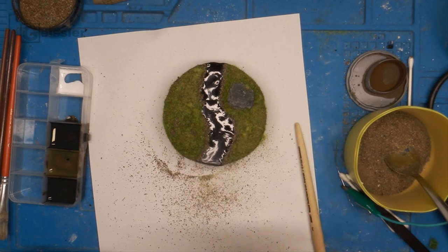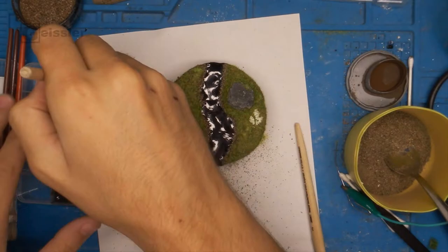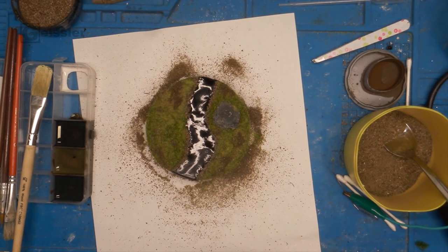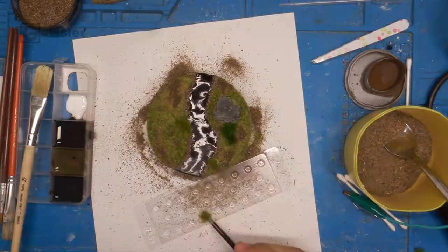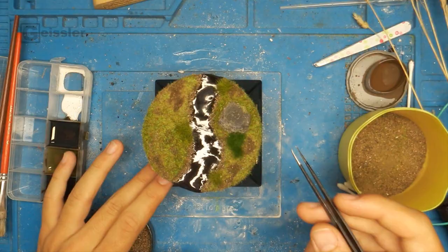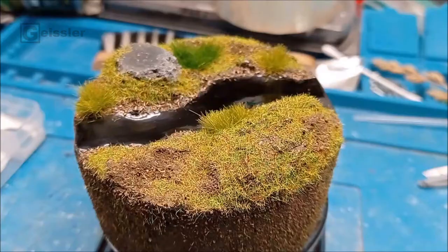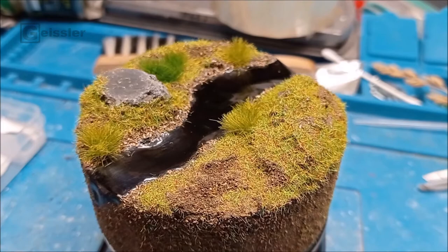So now that the dirt is also dry I can start adding these little bushes right here. Alright so now all the bushes are placed. And I think it turned out really good. I like the look of the little dirt patches here and there. And the little bushes blending really nice.